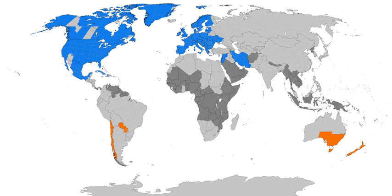Daylight Saving Time, or DST, also known as Summertime in British English, is the convention of advancing clocks so that afternoons have more daylight and mornings have less. Typically, clocks are adjusted forward one hour near the start of spring and are adjusted backward in autumn. Modern DST was first proposed in 1907 by William Willett. Many countries have used it since then. Details vary by location and change occasionally.